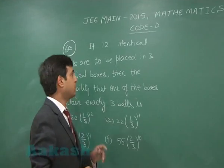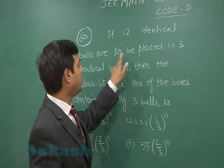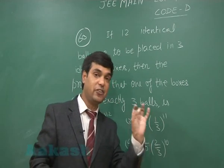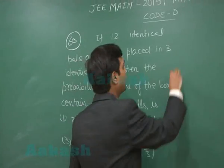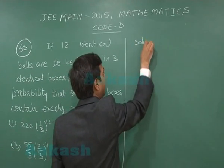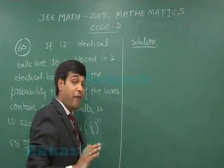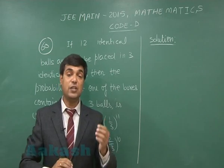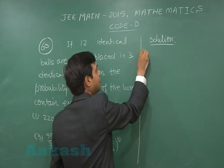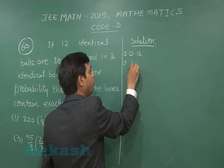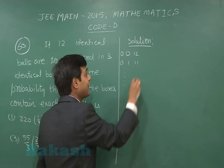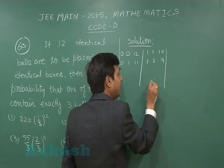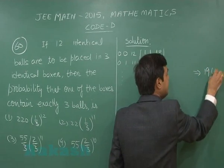Question number 60: If 12 identical balls are to be placed in 3 identical boxes, then the probability that one of the boxes contains exactly 3 balls is — 4 options are given. To solve this, we count all possible distributions: (0,0,12), (0,1,11), (1,1,10), (1,2,9), and so on. Continuing in this manner, we observe there are 19 such cases in total.